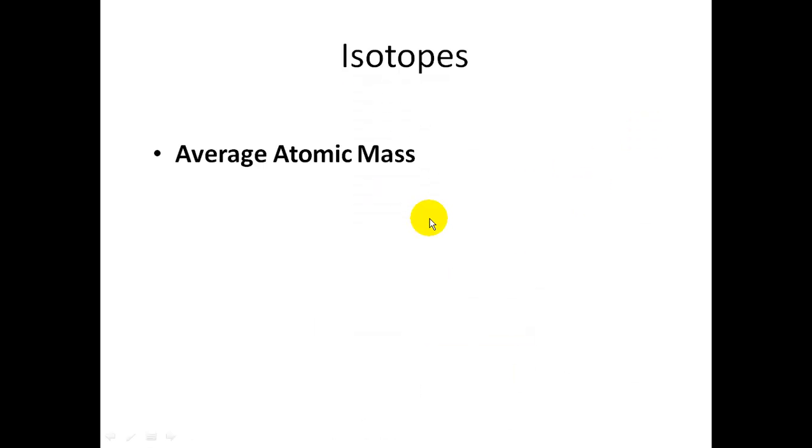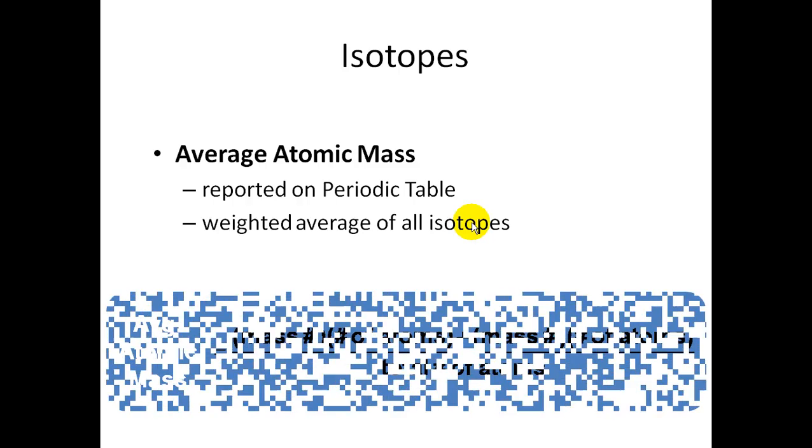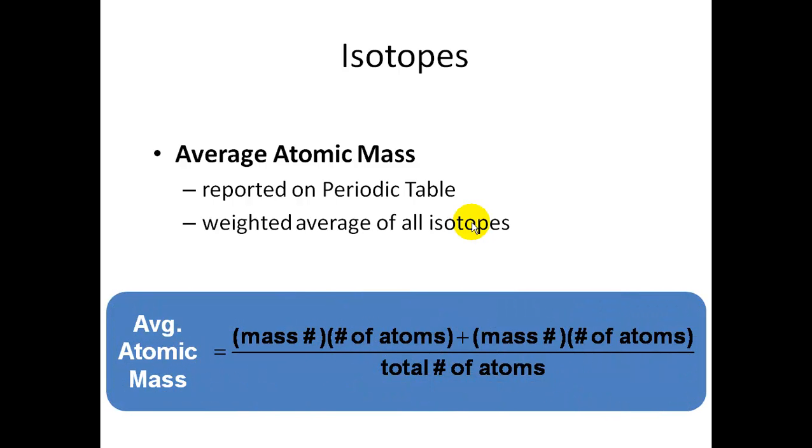The last thing we're going to do about isotopes is called the average atomic mass. It is reported, actually, on the periodic table, and basically, it's the weighted average of all the isotopes that there are. So, to calculate that, here's this equation. The average atomic mass is that you would take the atomic mass of all the isotopes and basically divide it by the total number of atoms. To get the atomic mass, you take the mass number and multiply it by how many atoms you have of that mass number. Add them all up and divide by the total.